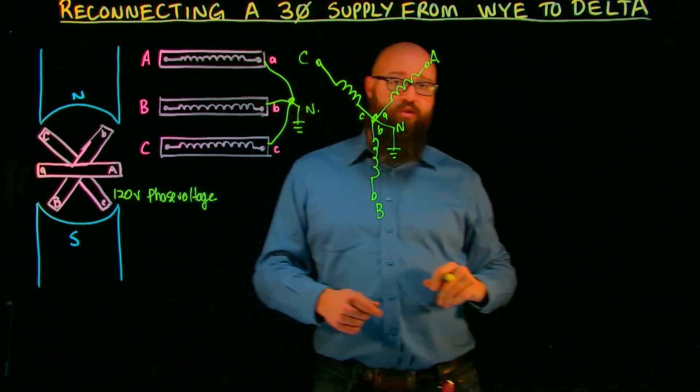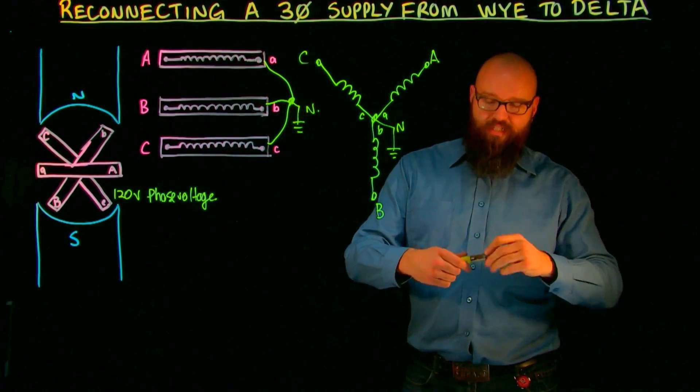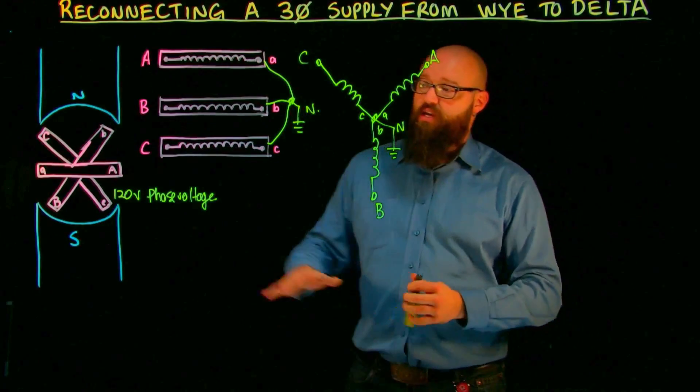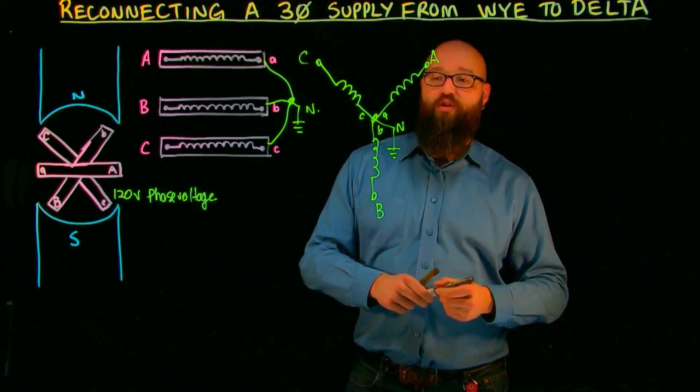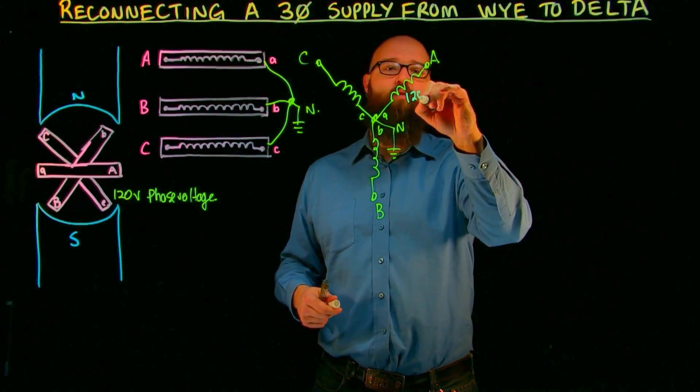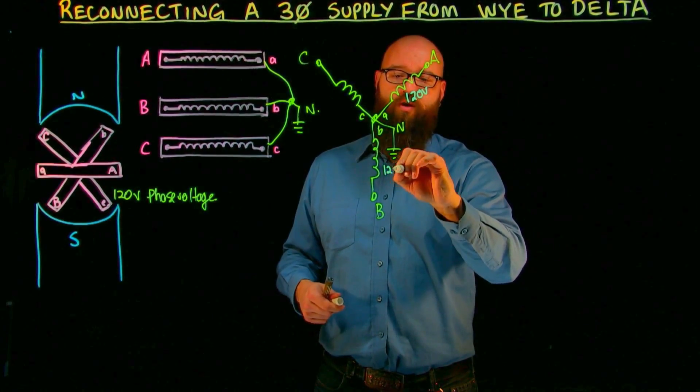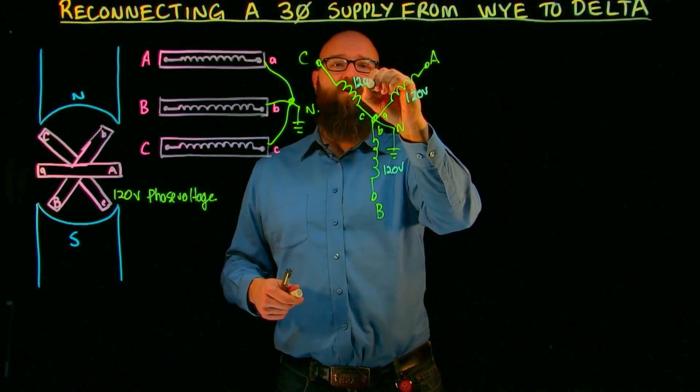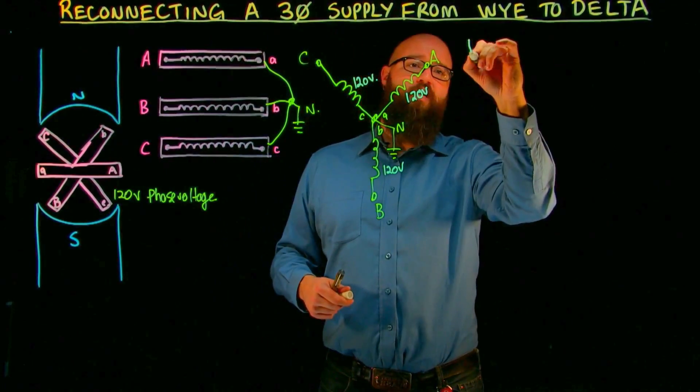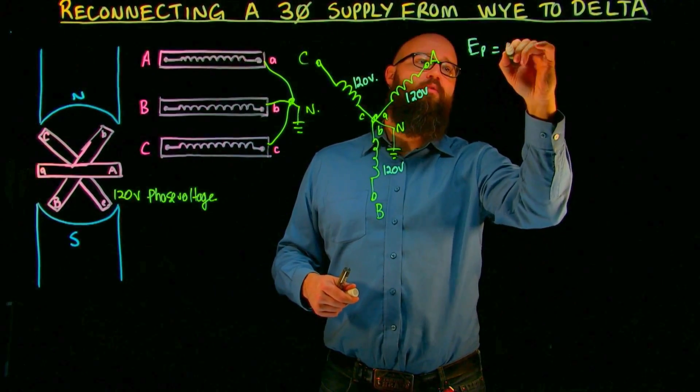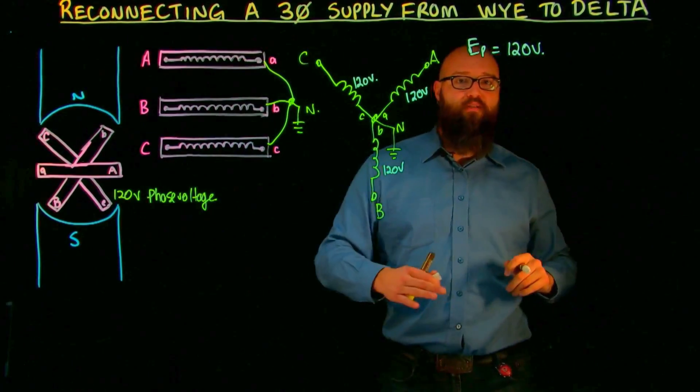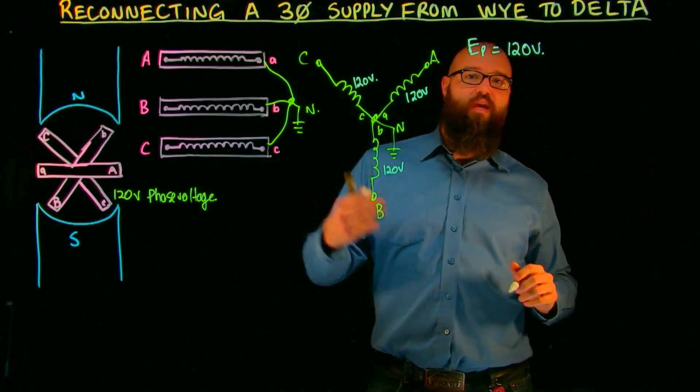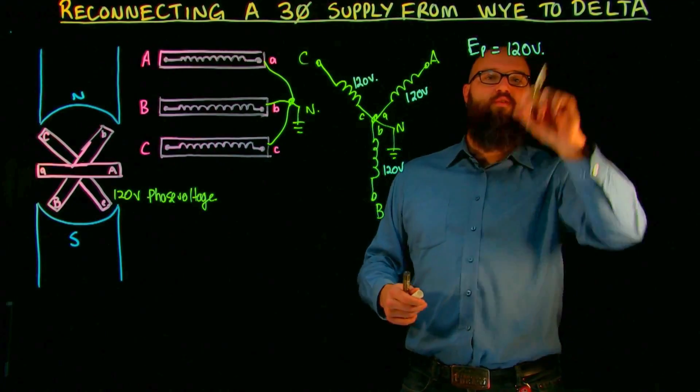So a couple numbers we want to observe before we take this and reconnect it into delta. First of all, if we said that we have 120 volts phase voltage, we can take that right here and say 120 volts, 120 volts, 120 volts. E phase equals 120 volts. Now, one of the byproducts of a Y connected system is that we also get the dual voltage.